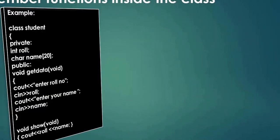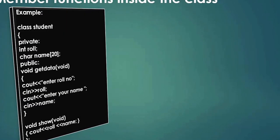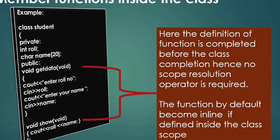For member function definitions inside the class, it is as simple as defining and declaring both together before the end of the class declaration. We write 'void get_data' with the function body within the scope of the class — no scope resolution operator is needed since the definition is completed before the class ends. One important caution: a function declared and defined inside the class becomes an inline function by default.